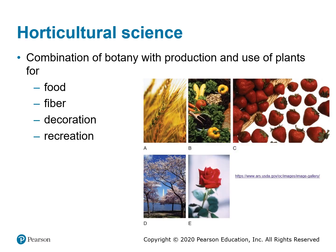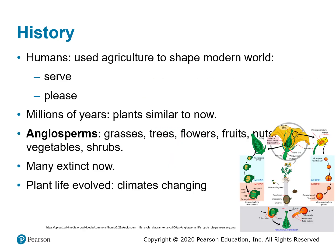Plant science, and therefore horticultural science, is a combination of botany with the production and use of plants for food, fiber, decoration, and recreation. These are just some examples of the many types of crops grown using techniques developed through plant science, including wheat, vegetables, fruits such as strawberries, landscape plants, and florist plants.